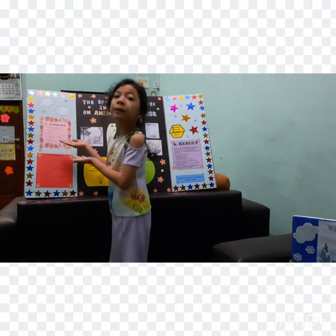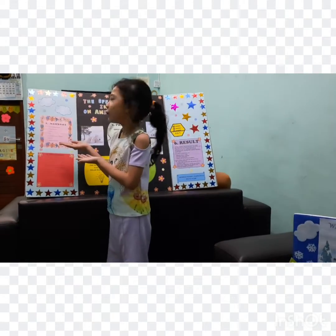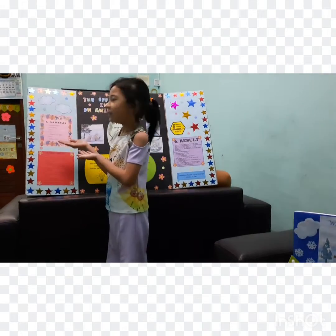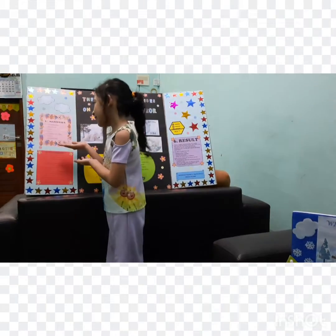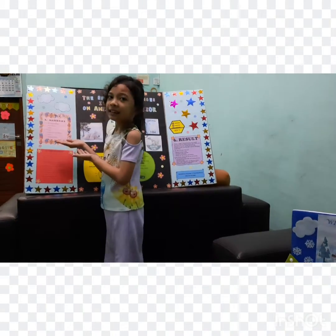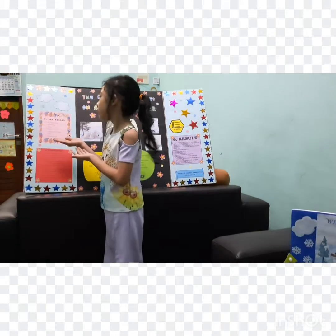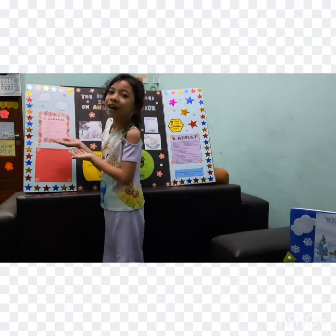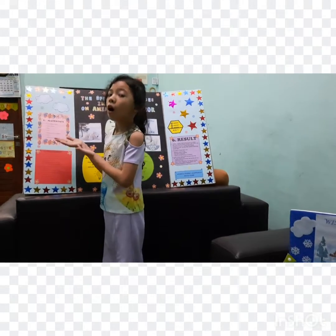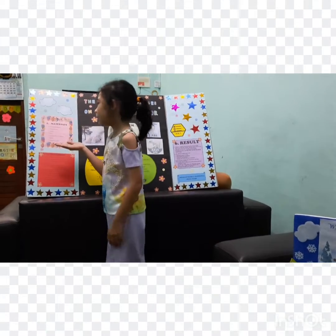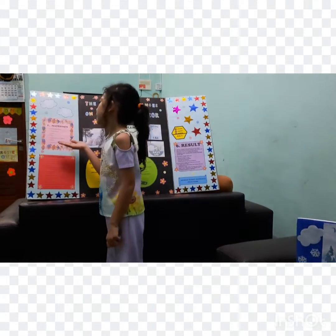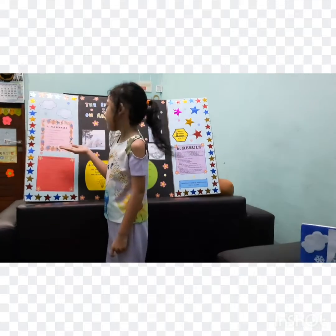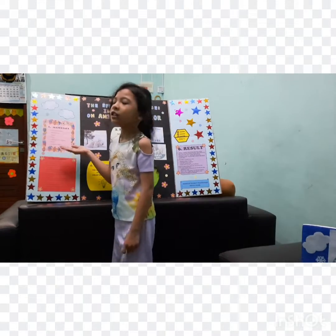One: presentation board. Two: model board. Three: scissor. Four: glue. Five: coloring pencil or marker. Six: pencil. Seven: additional stuff.